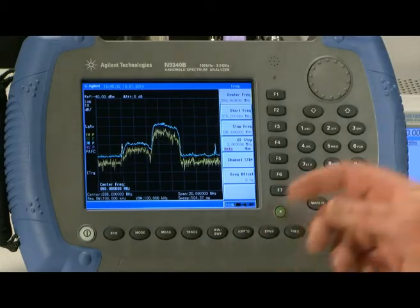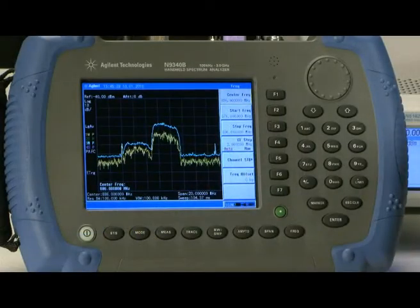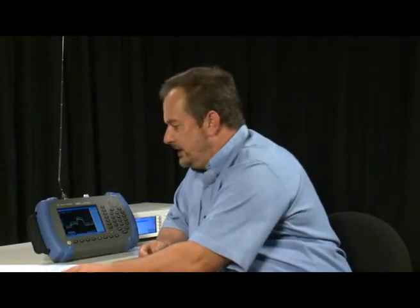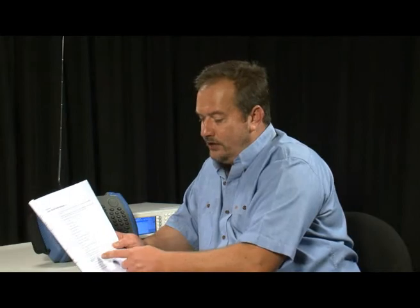Here I have set up the instrument to monitor the output from a mobile phone base station. So let's save the setup into the N9340B's internal memory so we can quickly recall it in the future. And if you are following along in the demonstration guide then turn to section 2 and we are going to follow the instructions at the bottom of the page there.